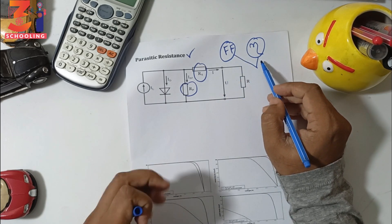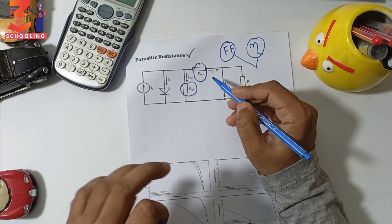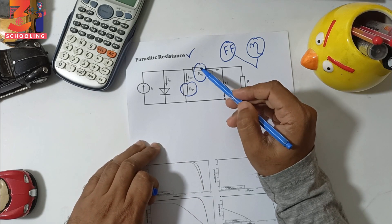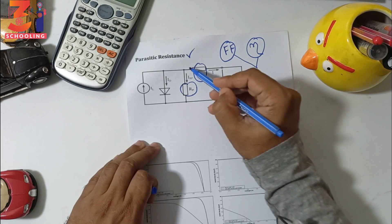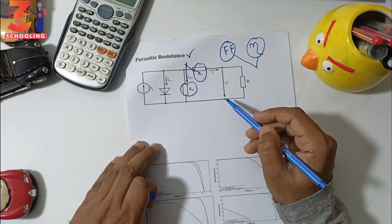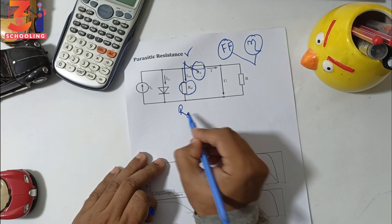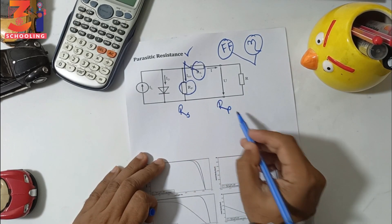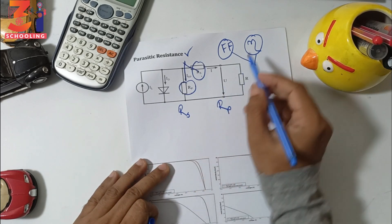Cell efficiency is reduced if the equivalent circuit has resistances where power is dissipated. High series resistance and high shunt resistance act as parasitic resistances. There are two types of parasitic resistance: series resistance Rs and shunt (parallel) resistance Rp.